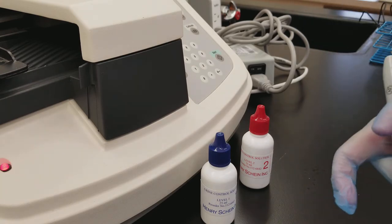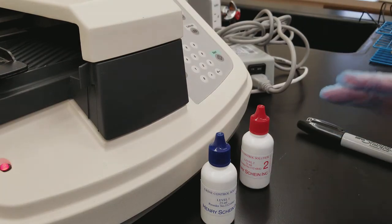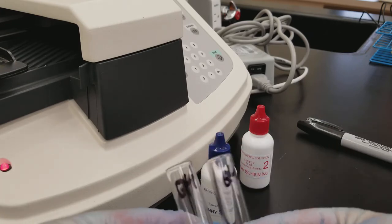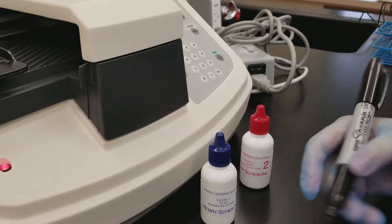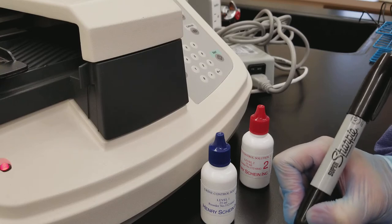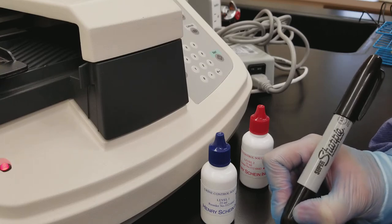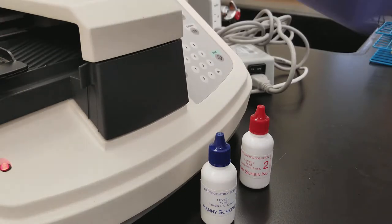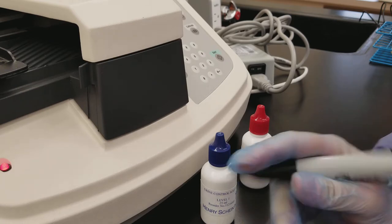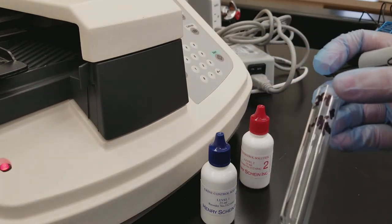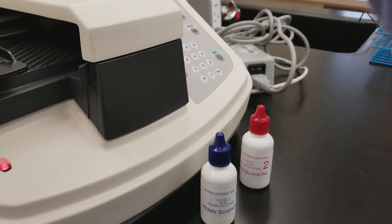Since they are squeeze bottles, I cannot squeeze them automatically onto the strip, and so what I'm going to do is I'm going to aliquot them into the labeled tubes. The best practice to do is to also date them, and today's the 12th, and my initials. So what ends up happening is these may deteriorate over time due to light exposure or settling.